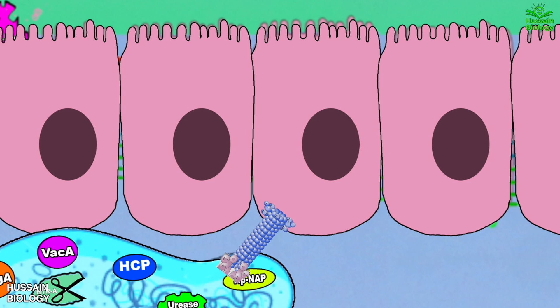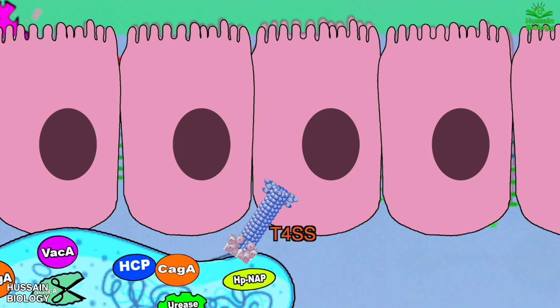Here it injects a pilus-like structure into the host cell called T4SS — that's the type 4 secretion system. Through this T4SS, Helicobacter pylori injects the CagA molecule into the host cell, as shown in the animation.